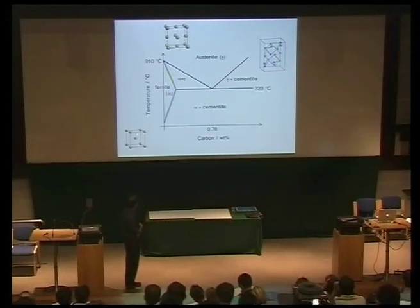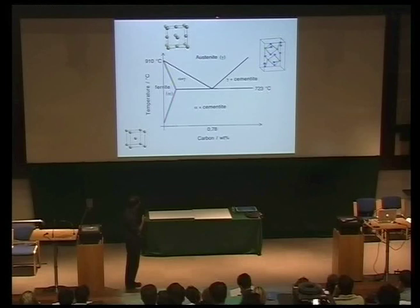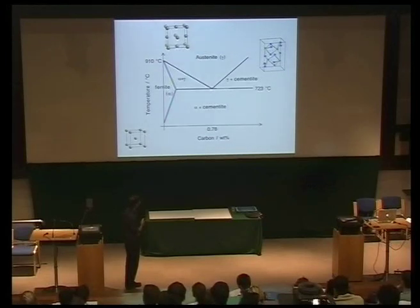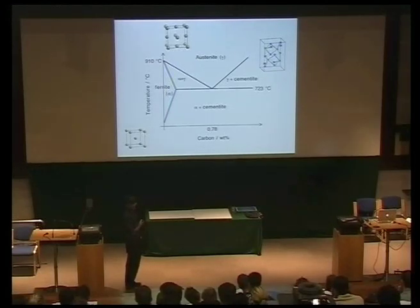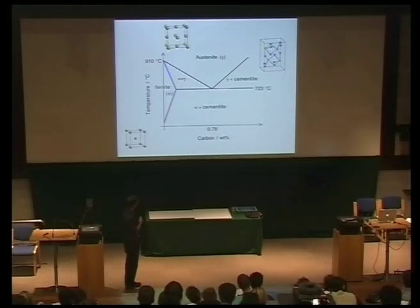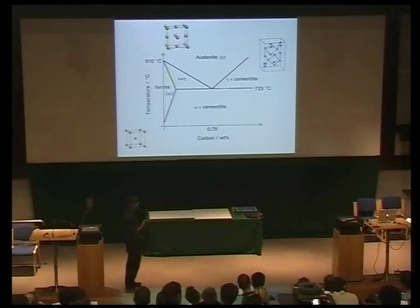Austenite is a cubic close-packed phase, and ferrite is the body-centered cubic phase. If I have an alloy of exactly the eutectoid composition, then as I cool the austenite, nothing will happen until I get to this temperature, and then the austenite begins to decompose into a mixture of ferrite and cementite. If I have an alloy which is hypo-eutectoid, then I will first get the formation of ferrite, and as I cool, the composition of the austenite moves along this phase boundary, and eventually the remaining austenite decomposes into this mixture of ferrite and cementite.